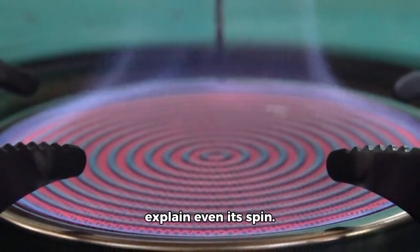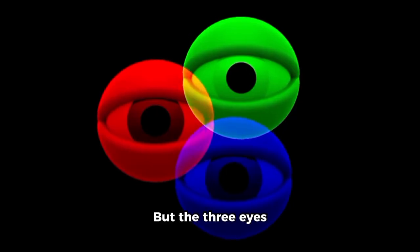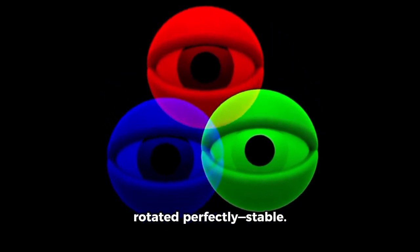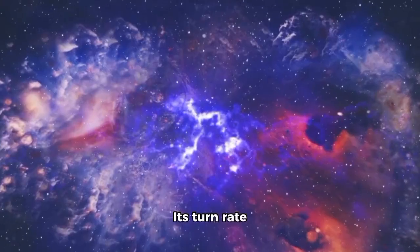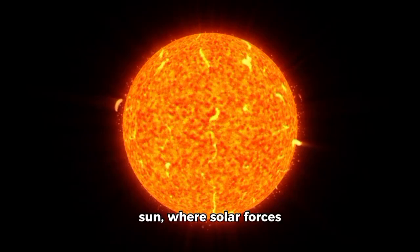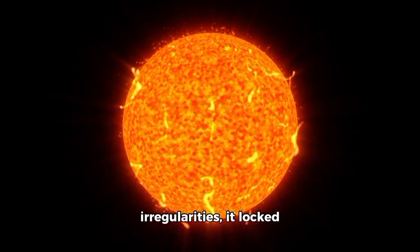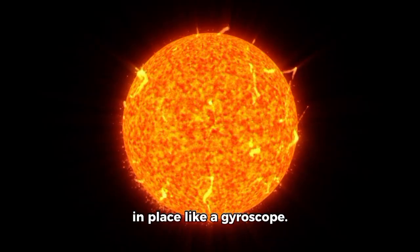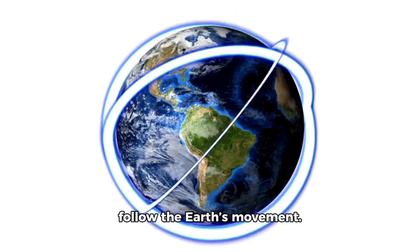Physics couldn't explain even its spin. Most space rocks tumble without warning, but 3E rotated perfectly stable. Its axis didn't drift. Its turn rate remained constant. Even as it neared the sun, where solar forces should have caused rotational irregularities, it locked in place like a gyroscope.